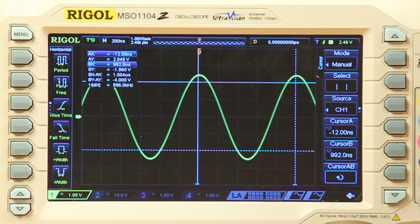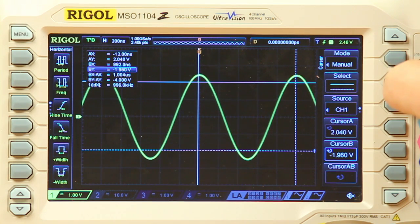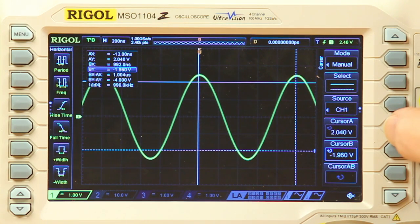These same operations can be done in the Y axis. So, we can select Y. Source is still Channel 1. Our cursor A...